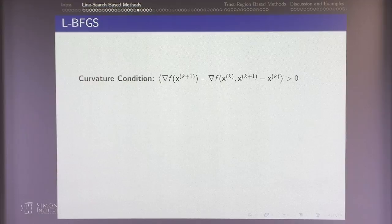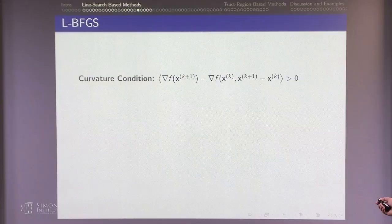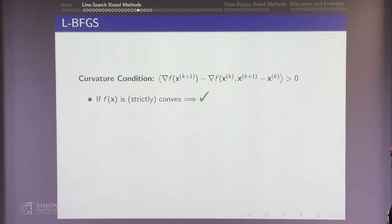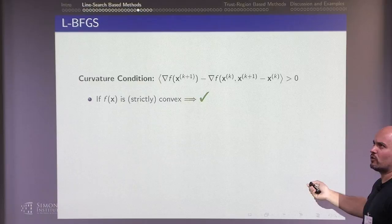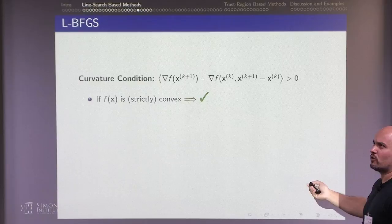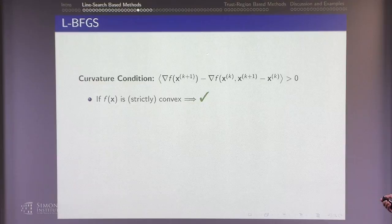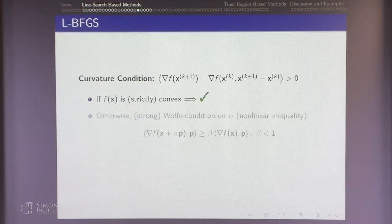Remember the curvature condition: the inner product of the gradient difference and the iterate difference must be strictly positive to maintain positive definiteness. For non-convex cases, in addition to the Armijo line search, you need the Wolfe condition. The Wolfe condition says: go along direction p long enough such that the inner product between p and the gradient at the next iteration is some constant fraction larger than the same product at the current point. You can show that satisfying this Wolfe condition guarantees the curvature condition is met.